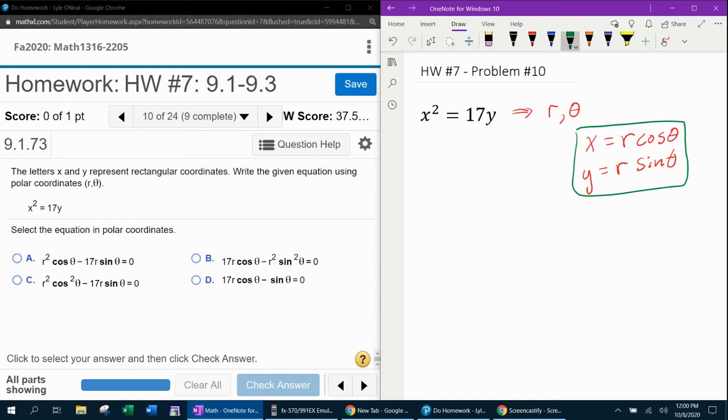So what does that mean? That means for every x, I can replace it with r cosine theta. And for every y, I can replace that with r sine theta. So here I have x squared. I can replace that with r cosine theta squared. And then 17 times y, I can replace that with r sine theta.